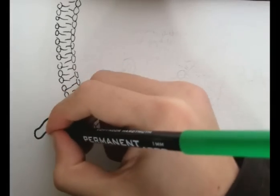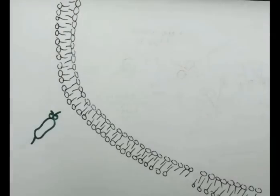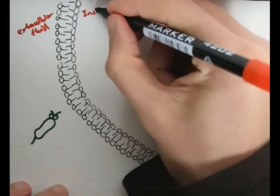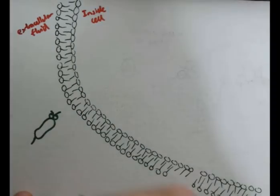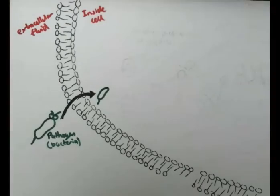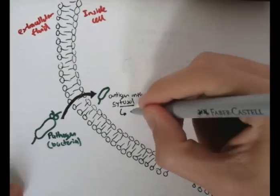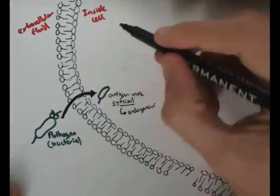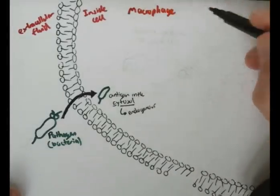Here we have a normal cell and here we have a pathogen. This is the extracellular fluid and here it is inside the cell. Now the pathogen, in this case a bacteria, enters the cell and goes into the cytosol, enters the nucleus and begins taking control and replicating. We call this endogenous. So this cell, let's just say now, is an infected macrophage.